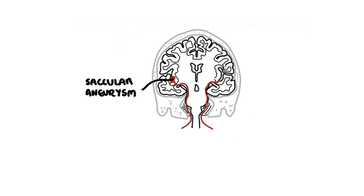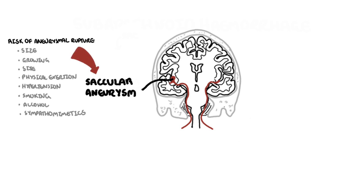All the pathophysiology that follows can be related back to any of the causes. Specifically for the aneurysm, the risk of aneurysmal rupture includes the size of the aneurysm, how quickly it grows, and the site of the aneurysm. For example, posterior circulation aneurysms involving the vertebrobasilar artery or the posterior communicating arteries have the highest rates of rupture. Physical exertion is a risk, as well as hypertension and smoking.